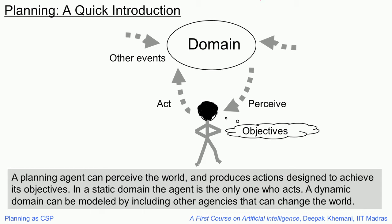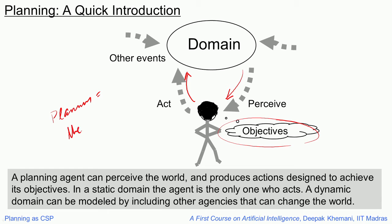In planning, there is an agent who is trying to solve certain problems because the agent has certain objectives. The problems are in a given domain, which has to be described using some language. The agent can perceive what is true in the domain and can act in the domain. Some people have called planning as the reasoning side of acting — the agent wants to do actions in an intelligent fashion, after some deliberation. That deliberation the agent does is called planning.